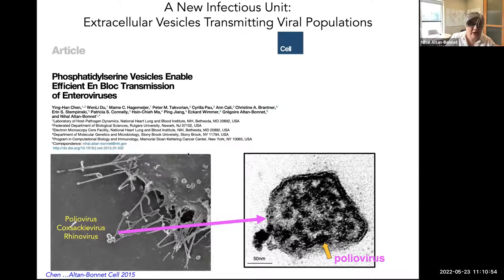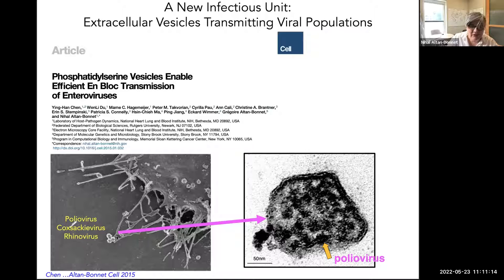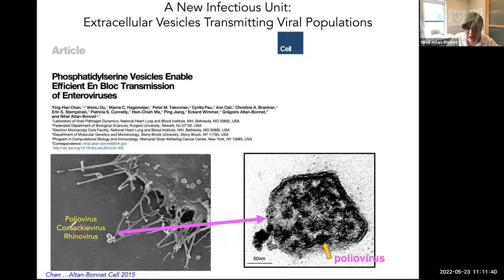About seven years ago, we started on this journey to figure out how poliovirus and other non-enveloped viruses — such as Coxsackievirus and rhinovirus, one of the agents of the common cold — are released from cells in vesicles. The scanning EM picture shows the edge of a poliovirus-infected cell, with three vesicles that have emerged. If you collect them and do transmission EM, slicing them open, you see they have a single bilayer membrane and inside are poliovirus particles — electron-dense structures packed inside.